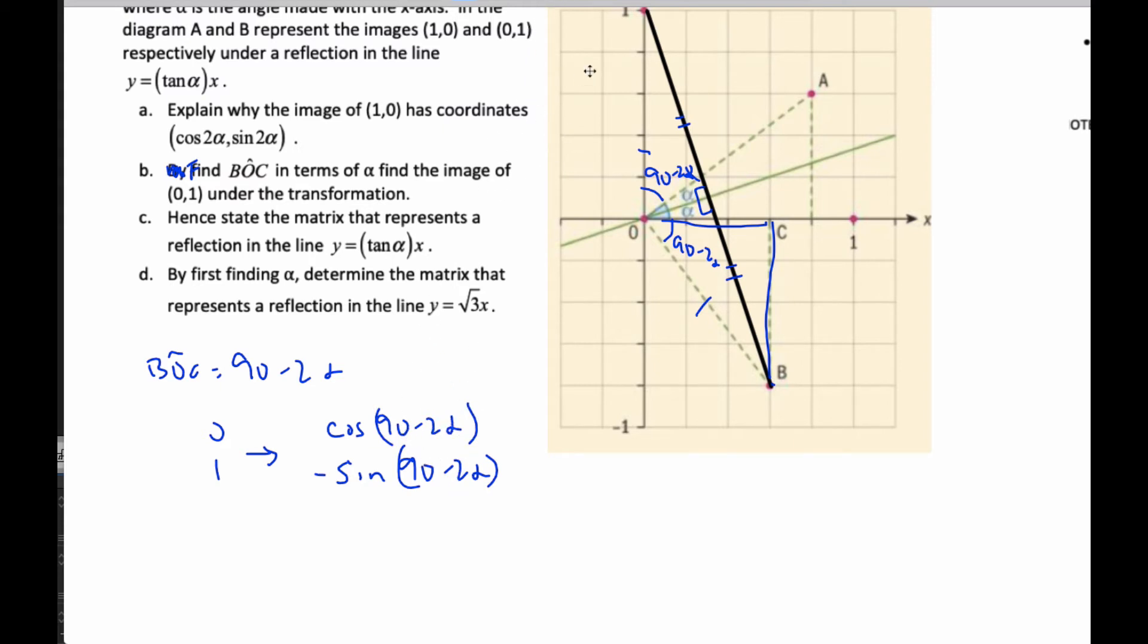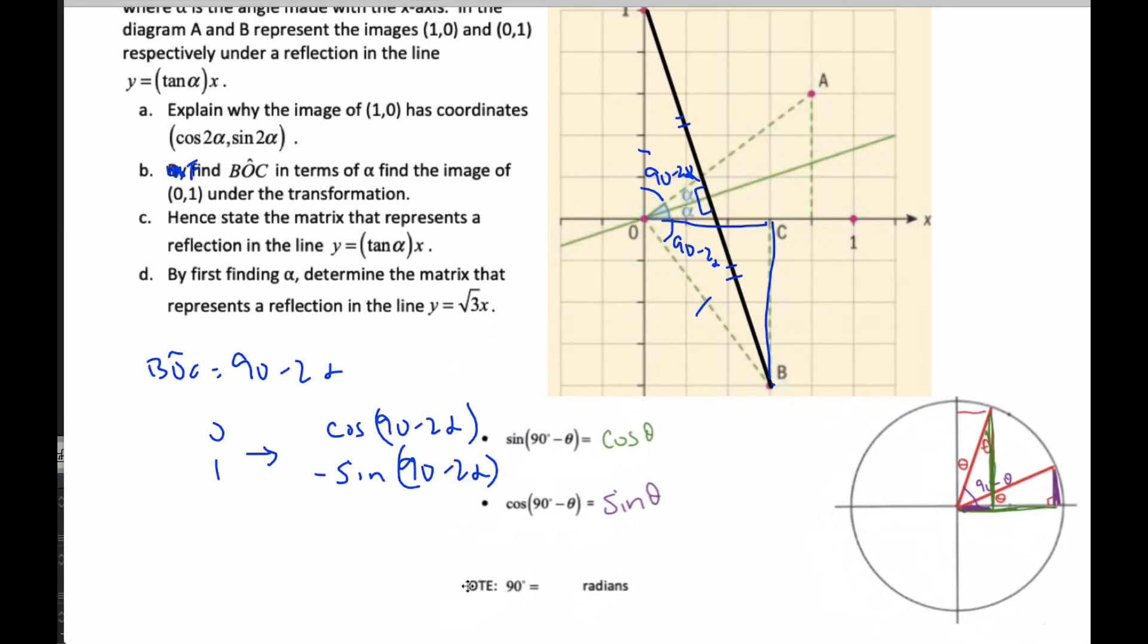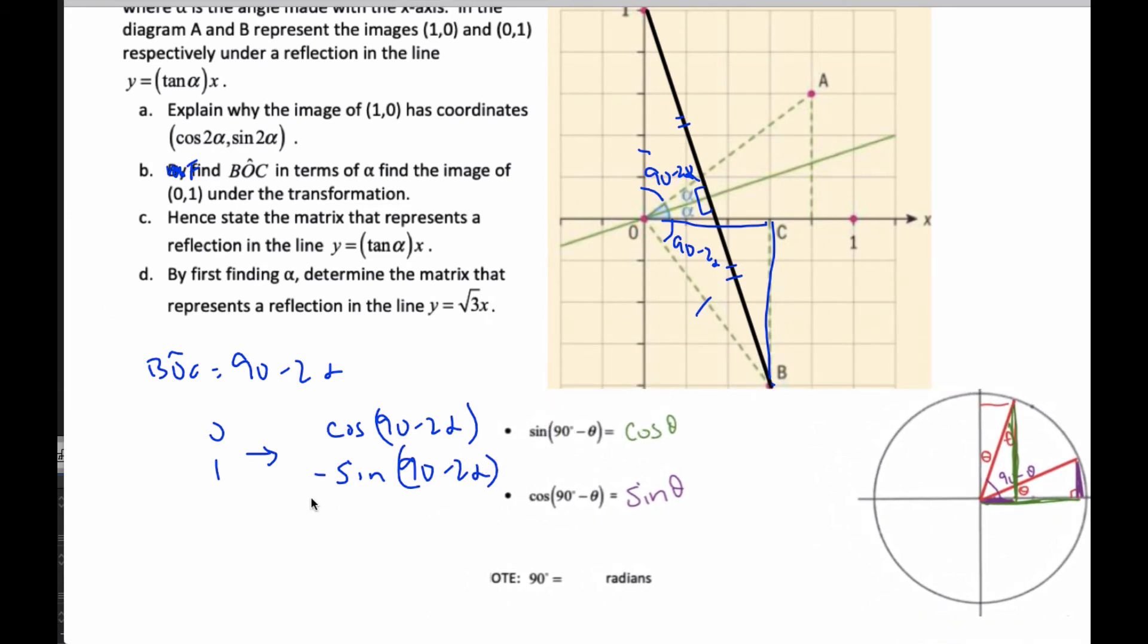The problem is this 90 part. But if you remember, just previously we did this scenario here where sine of 90 minus theta equals cosine, and cosine of 90 minus theta equals sine. So then this one here is equivalent to sine of 2 alpha. And sine of 90 minus 2 alpha, I'm using this one here, is going to end up as being negative cosine of 2 alpha.